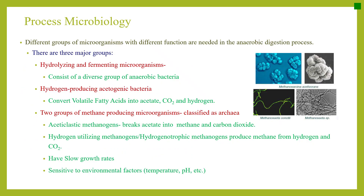Let's discuss process microbiology a little bit more. Different groups of microorganisms with different functions are needed in the anaerobic digestion process, and they can be classified into three major groups. The first one is hydrolysis and fermenting microorganisms, consisting of a diverse group of anaerobic bacteria. The second one is hydrogen-producing acetogenic bacteria, which convert volatile fatty acids into acetate, carbon dioxide, and hydrogen.